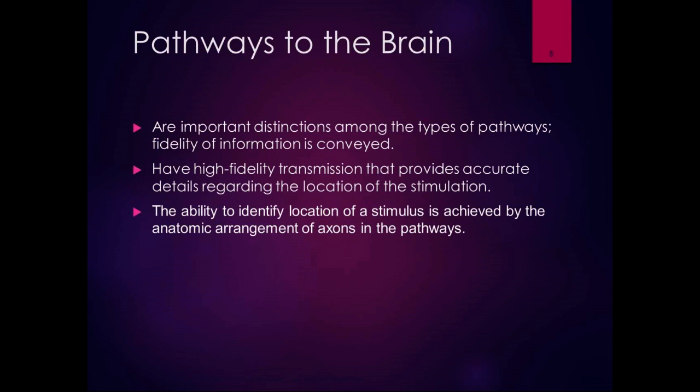The pathways that take that encoded sensory information to our brain have important distinctions among the different types and the fidelity of information conveyed. Fidelity means how true the information is to the original source — how accurate it is. Having high-fidelity transmission that provides accurate details regarding the location of the stimulus gives us the ability to identify where a stimulus is. The axons in the pathways are arranged in an anatomical arrangement, so our cerebral cortex can say: that's in your left hand, or that's in your right foot, or that's in the back of your left knee. We have an anatomic arrangement in the cerebral cortex; individual pathways go up to the part of the cortex that deals with that area.